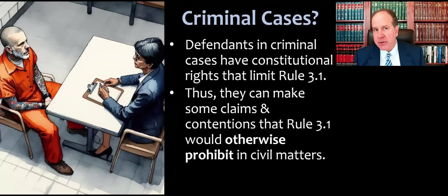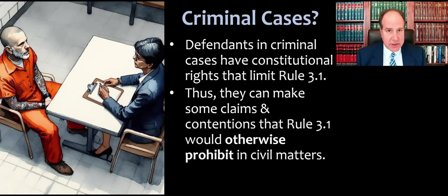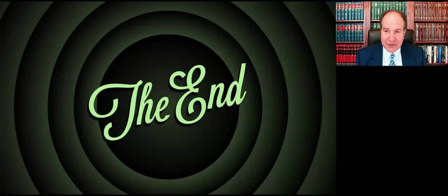Remember that defendants in criminal cases have constitutional rights that can limit the reach of Rule 3.1. They can make certain claims and contentions — for example, they can assert their innocence even when the evidence of guilt is overwhelming. The Supreme Court has affirmed that. So they have some latitude that you don't have in a civil case. And that concludes our quick lecture about ABA Model Rule 3.1.